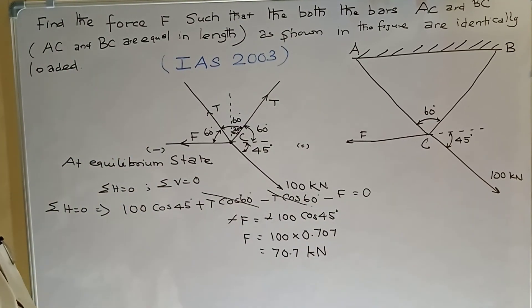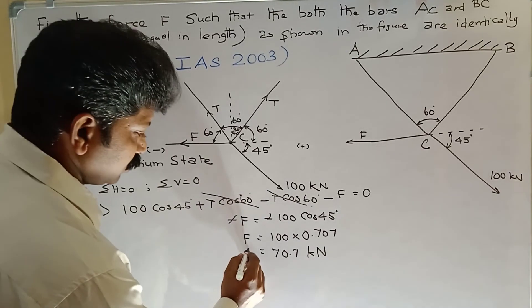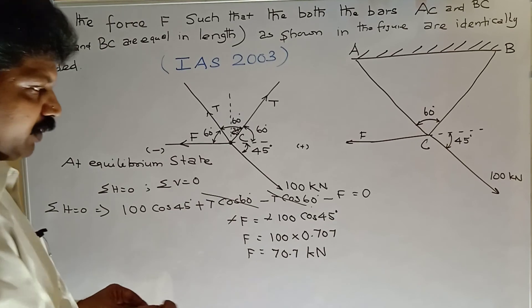70.7 kN. F equals 70.7 kN. This is our answer.